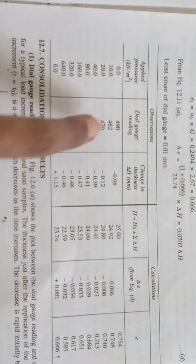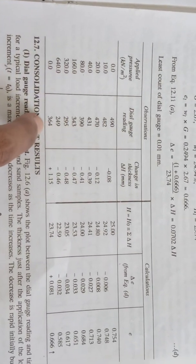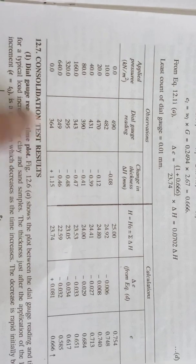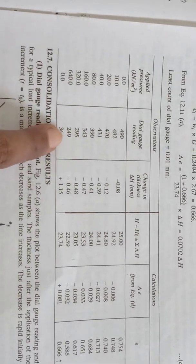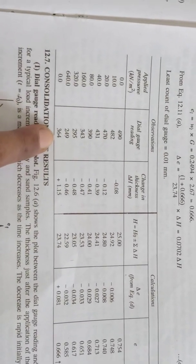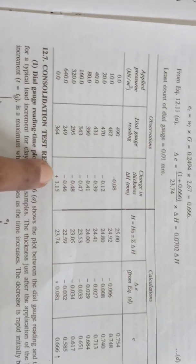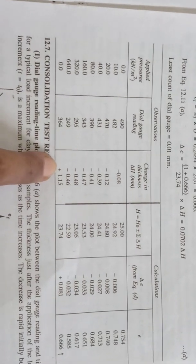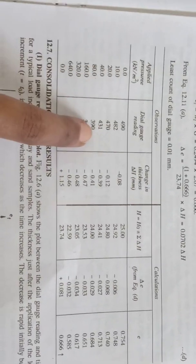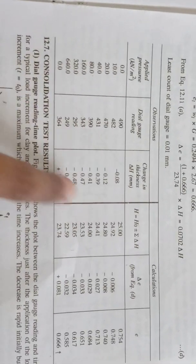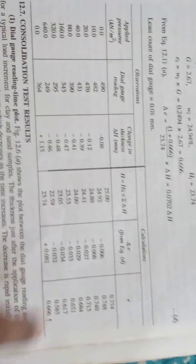The dial gauge reading indicates a swell condition, with a value of plus 9. We can then add these two columns — or three columns — to compile the data.